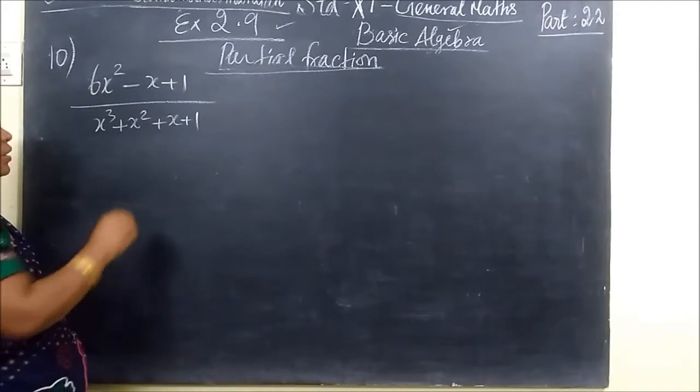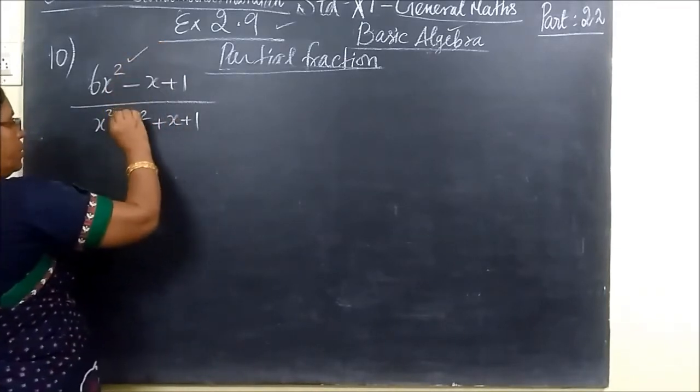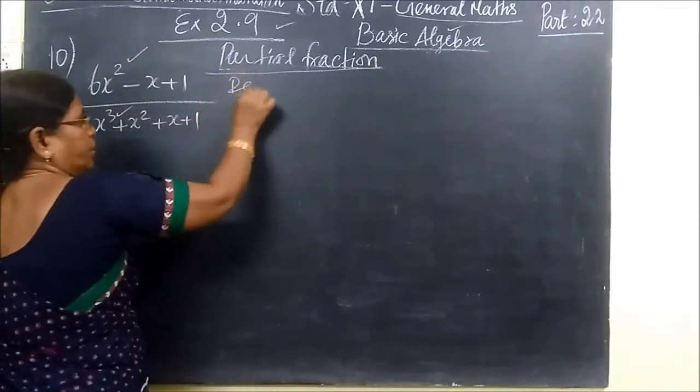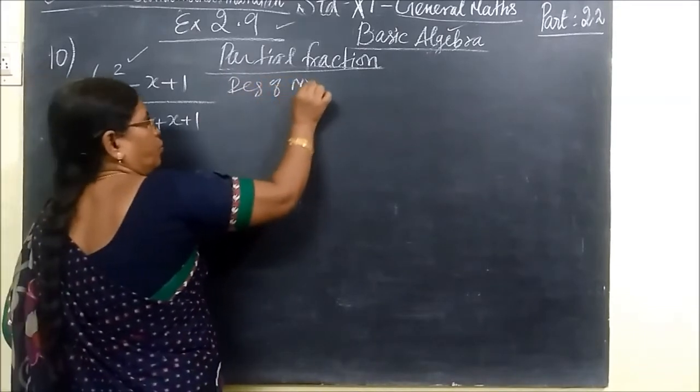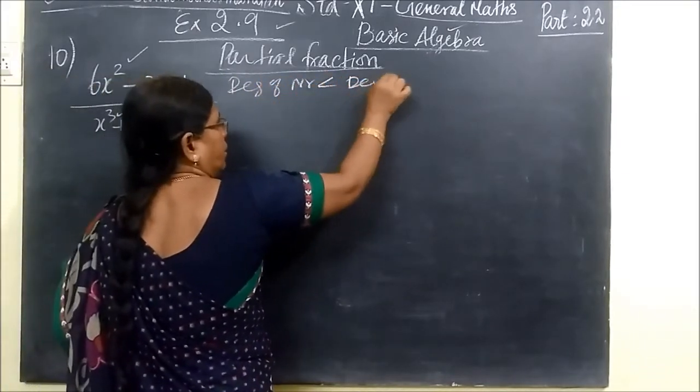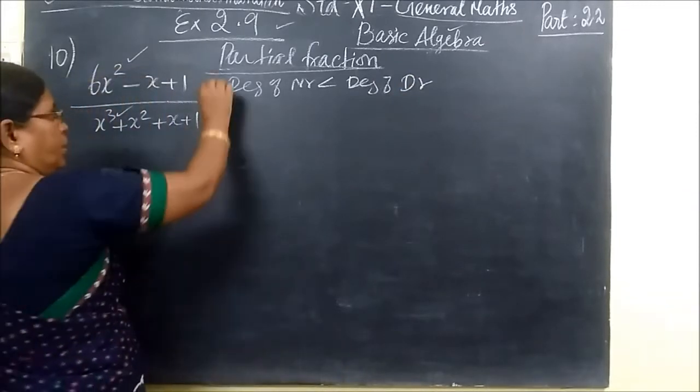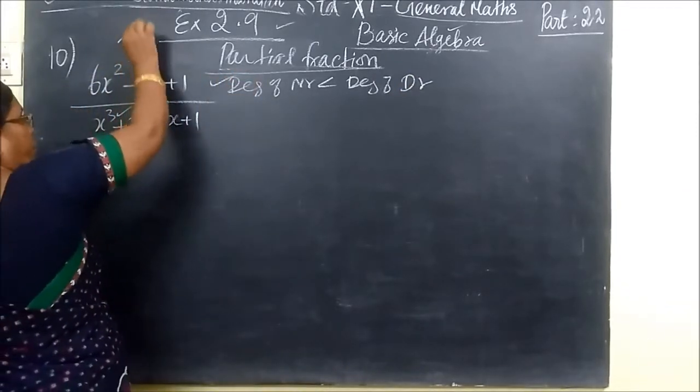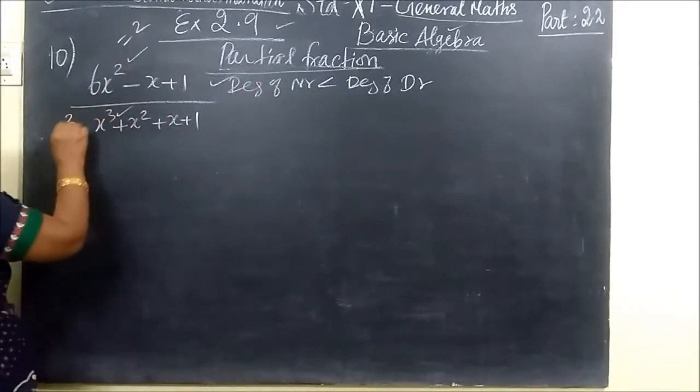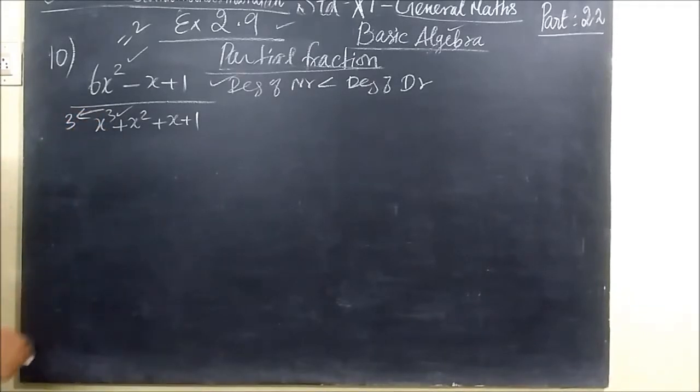Every time we are checking the degree of numerator should be less than degree of denominator. Here it is correct only. It is only degree 2. It is only degree 3. So this is correct only.